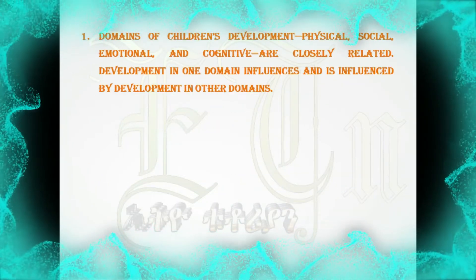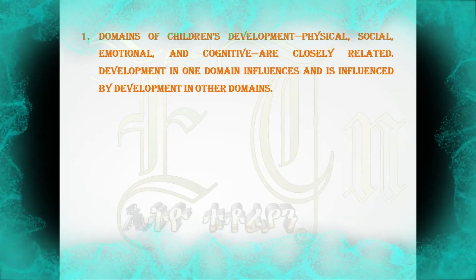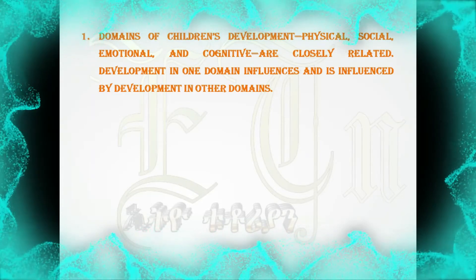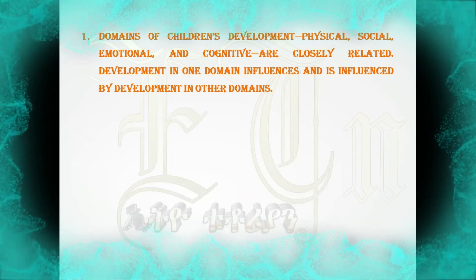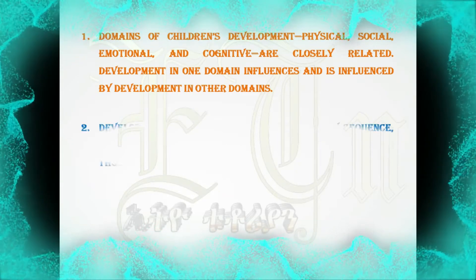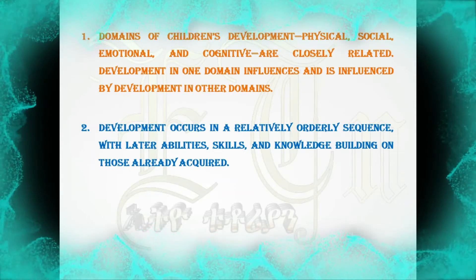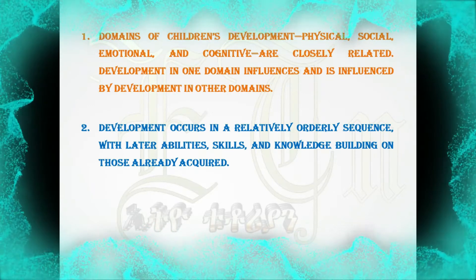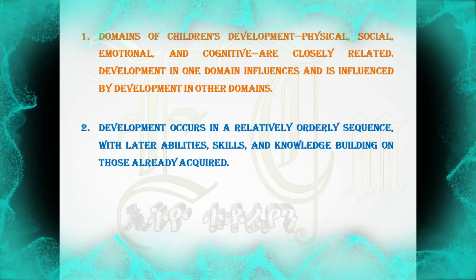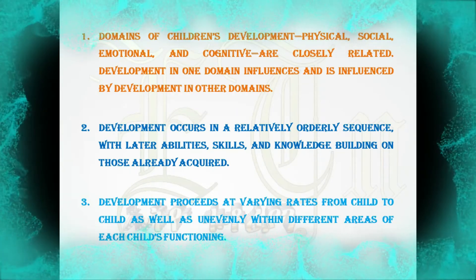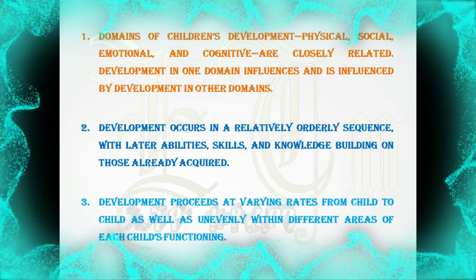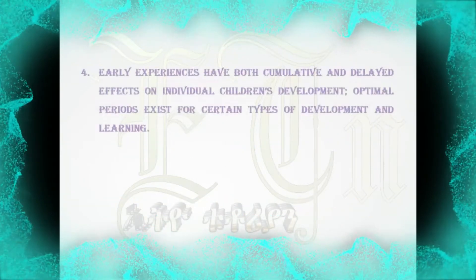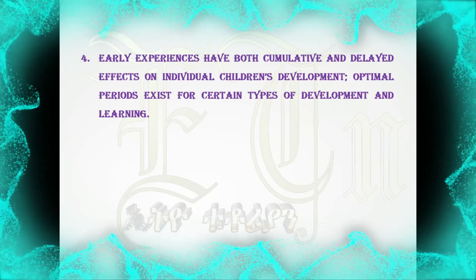One: Domains of children's development — physical, social, emotional, and cognitive — are closely related; development in one domain influences and is influenced by development in other domains. Two: Development occurs in a relatively orderly sequence, with later abilities, skills, and knowledge building on those already acquired. Three: Development proceeds at varying rates from child to child, as well as unevenly within different areas of each child's functioning.